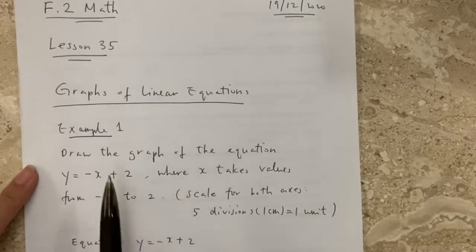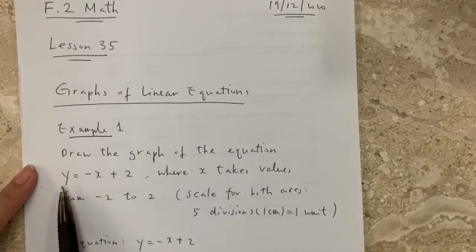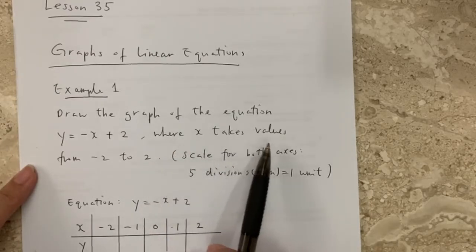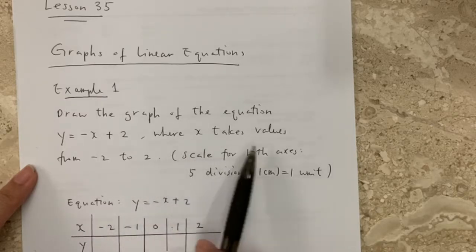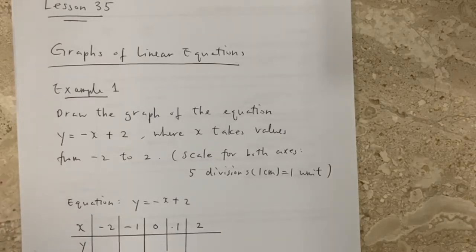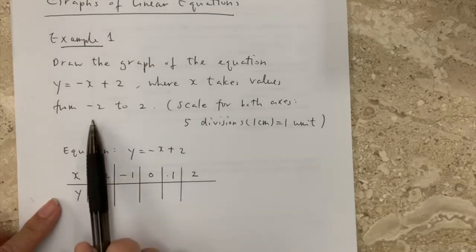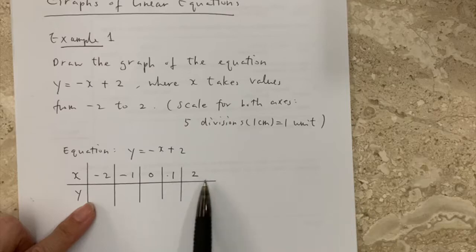Here is example 1. We have to draw the graph of the equation y equals to minus x plus 2, where x takes values from minus 2 to 2. That means we need a table to find all the coordinates for x and y. So from minus 2 to 2, that means minus 2, minus 1, 0, 1, and 2.